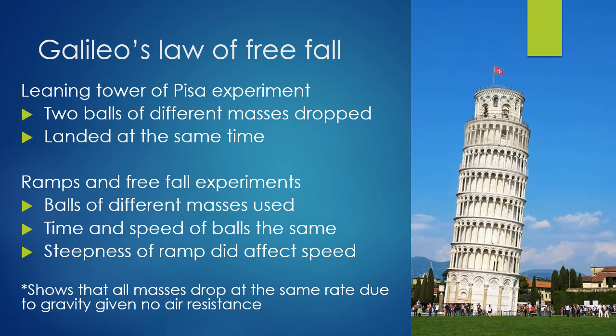What Galileo actually did was use ramps and experiments, realizing that regardless of mass or size, all objects fall at the same rate due to gravity. That rate is 9.8 meters per second squared. He figured out that number but didn't yet know it was a force pulling objects to the ground — Newton later discovered that, which we'll cover in Chapter 5. Note: these conditions assume no air resistance. With air resistance, a piece of paper won't fall at the same rate as a lead ball.